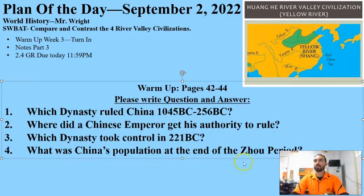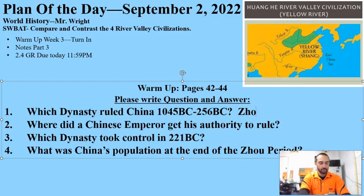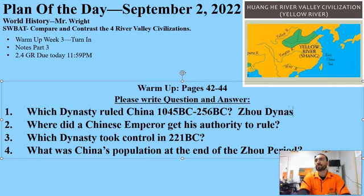Now that you've completed your reading, let's go through our warm-up questions. Which dynasty ruled China 1045 to 256 BC? The answer is the Zhou dynasty. While it's spelled with a Z, it's pronounced like the name Zhou. The Zhou dynasty.